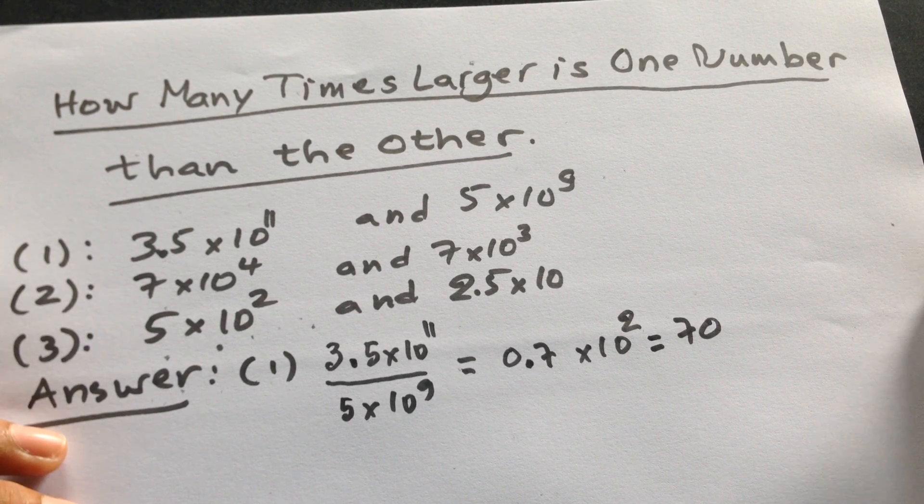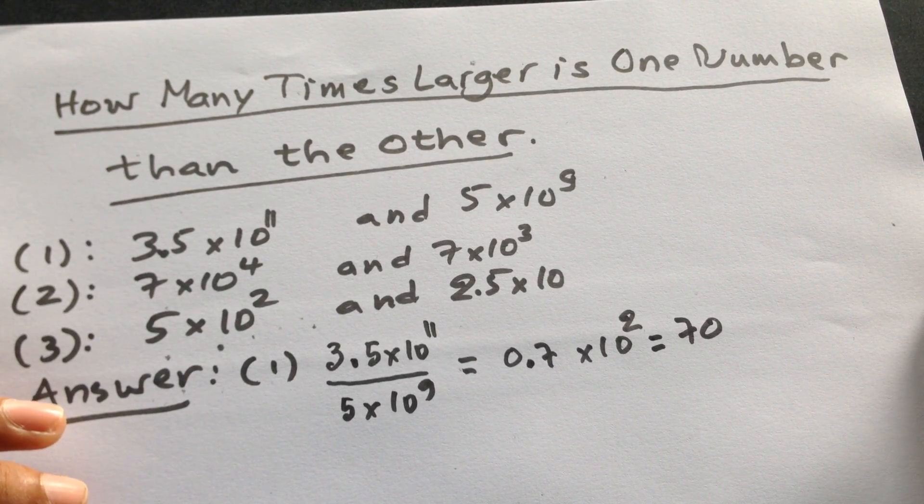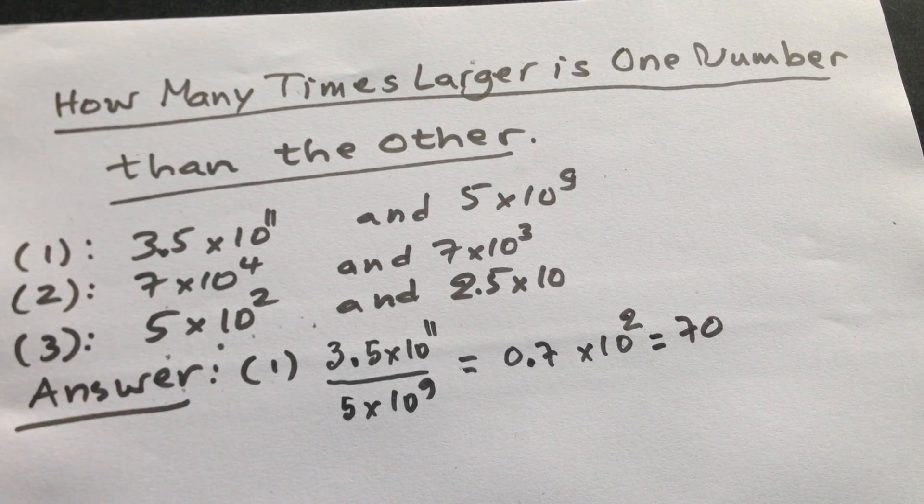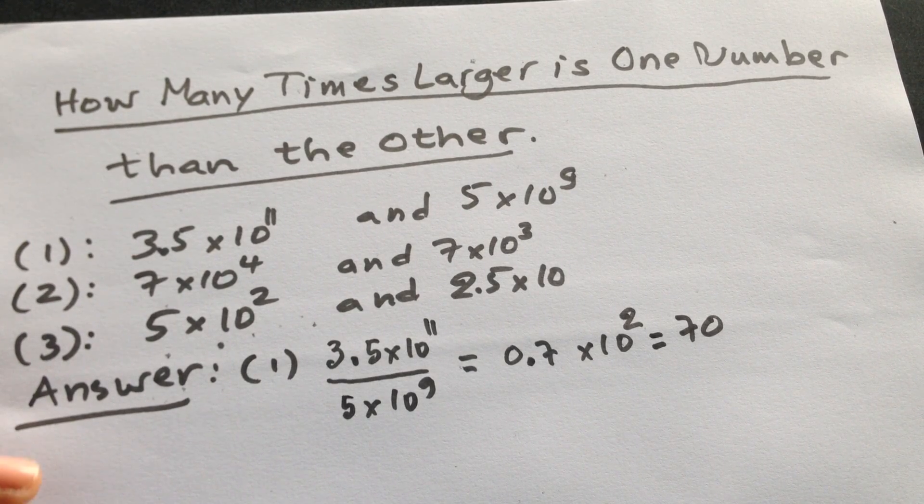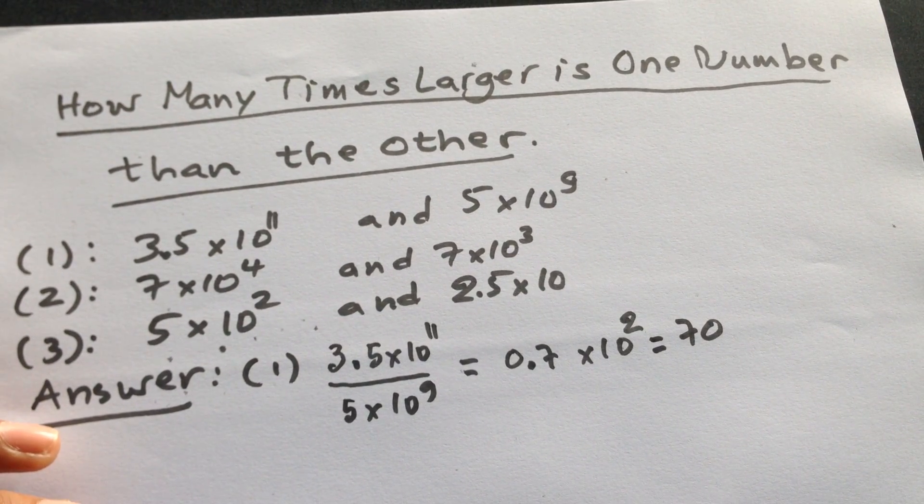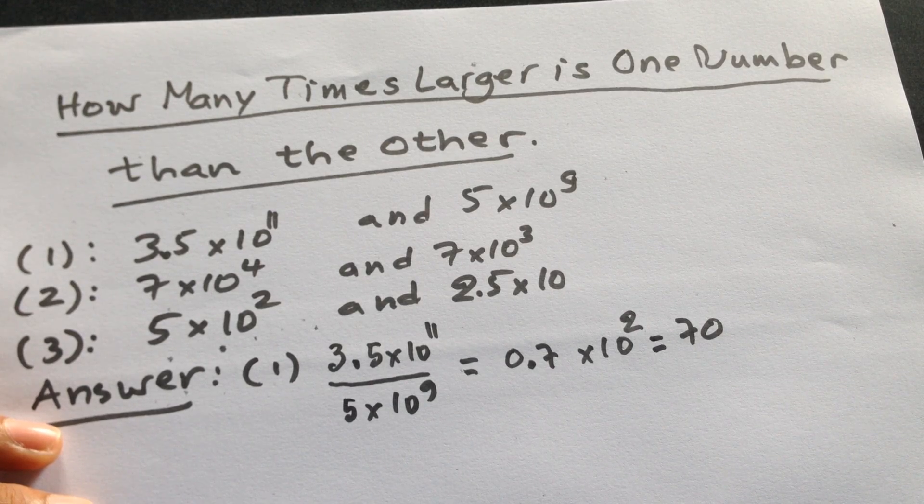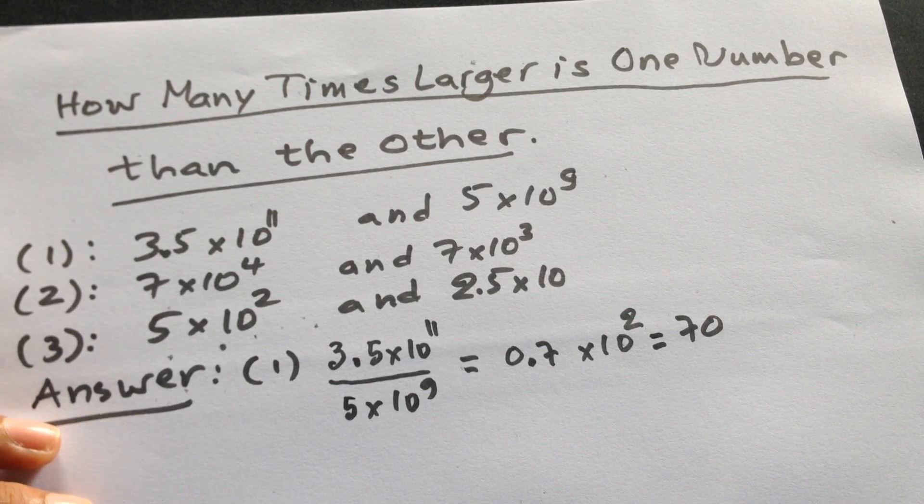So it means that 3.5 times 10 to the power 11 is greater than 5 times 10 to the power 9 by 70 times.